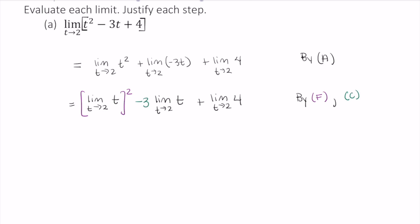Okay. So now we can evaluate this limit here. The limit as t approaches 2 of t. And that is by H. So in this case, we just replace the t here with 2. So this becomes 2 squared. And again, I use rule H.